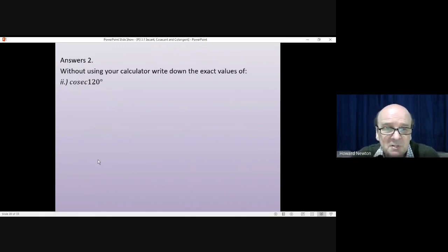Second question, the cosec of 120 degrees. Well, cosec is 1 over sine, so we've got 1 over the sine of 120 degrees. Now, the sine of 120 degrees is the same as the sine of 60 degrees. 90 plus 30, 90 minus 30, they'll give you the same thing using the symmetry around 90 degrees. There are other ways to get that, but for the moment, we'll stick with this as a method.